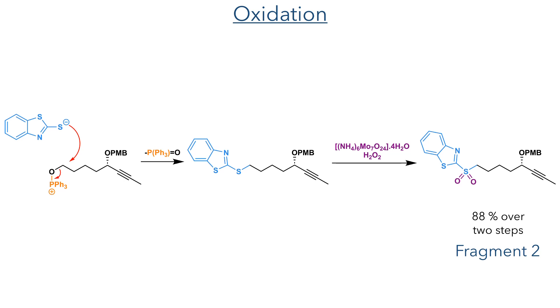This was then oxidised using ammonium molybdate and hydrogen peroxide to form the target sulfone in an 88% yield over two steps.